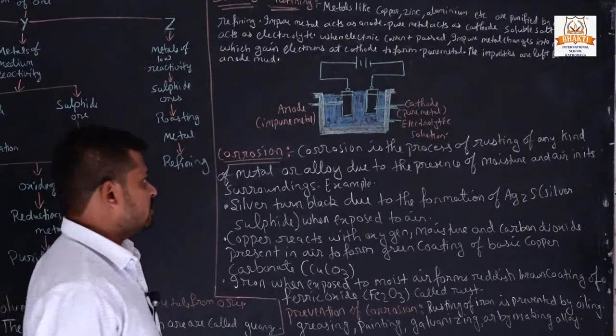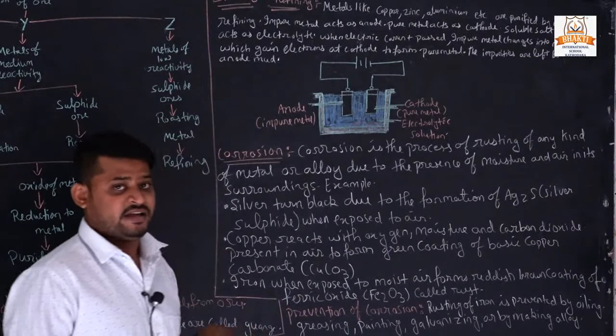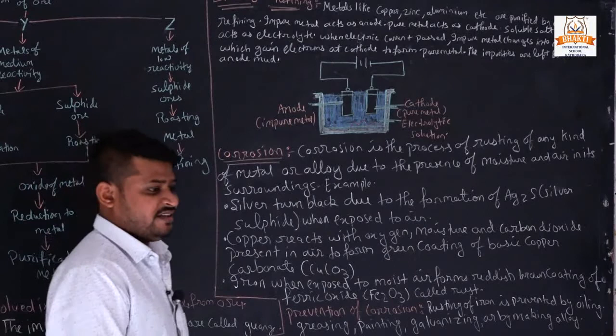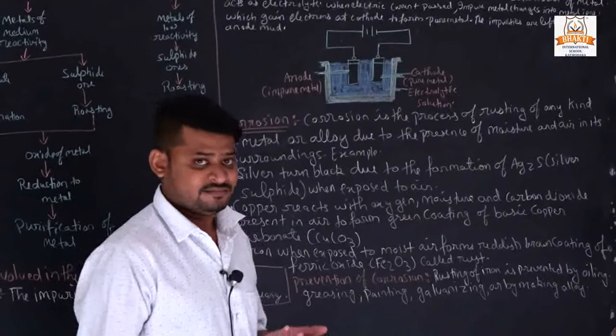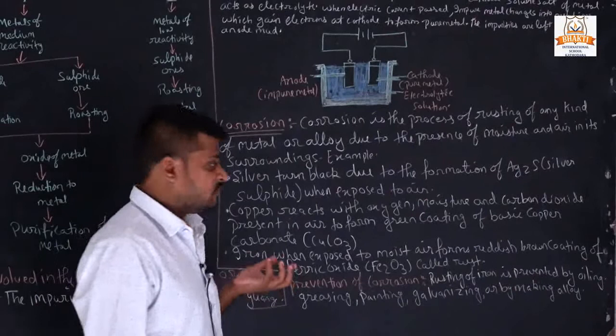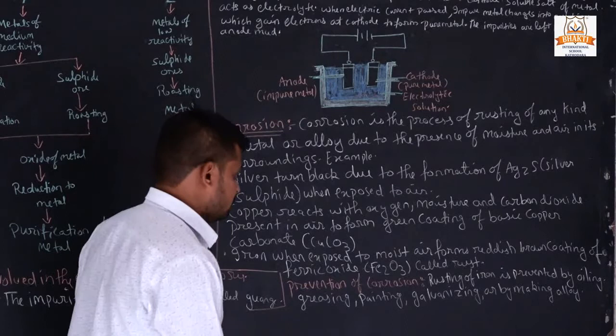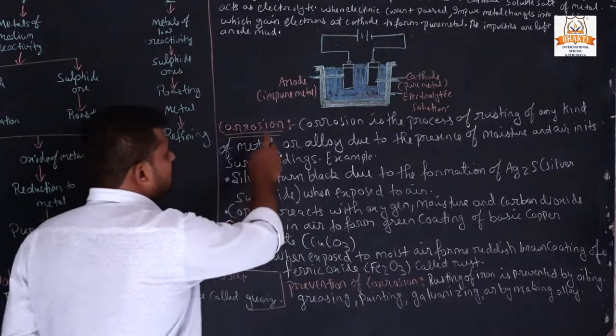Now, lastly, corrosion — which we already studied in a previous chapter. What is corrosion? Rusting of iron gives a red-brownish coating. On copper, a gray-green coating forms on the surface. Corrosion is the process of rusting of any kind of metal or alloy due to the presence of moisture and air in its surroundings.